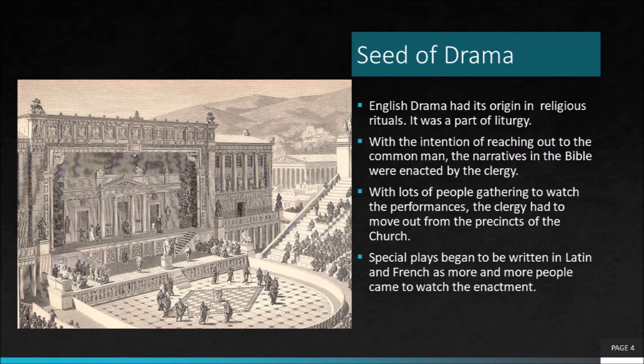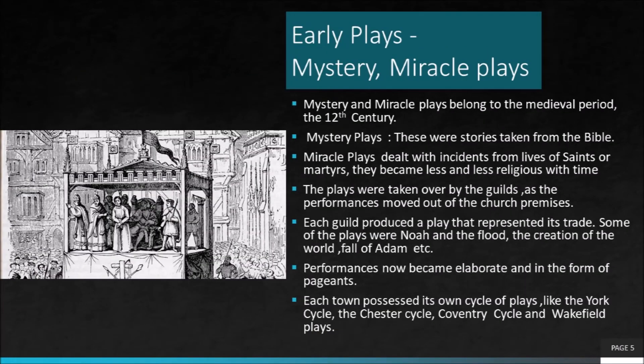In the beginning, English drama came from liturgy. The clergy enacted scenes from the Bible so that the layman could understand the narrative which was originally in the Latin language. As people began to come in good numbers, the venue of the enactment had to be changed. From the church premises, it went to the marketplace. The clergy passed on the tradition to the trade guilds.